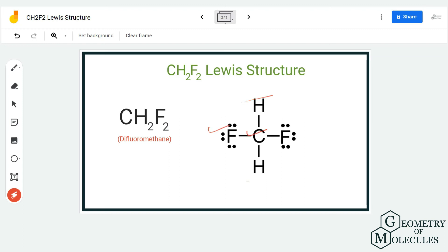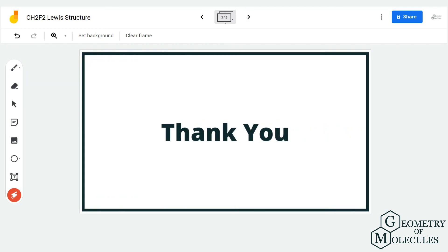...the atoms have complete octet, this is the Lewis structure for difluoromethane. I hope this video helps you understand that easily. For more videos on Lewis structure, molecular geometry, and polarity of molecules, make sure to subscribe to our channel. Thanks for watching.